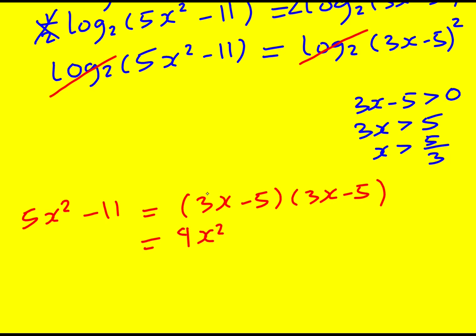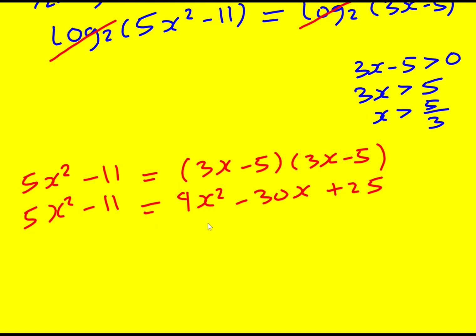which is 9x squared minus 30x plus 25. And therefore it's going to be 4x squared minus 36 plus sorry minus 30 plus 36 is equal to 0.